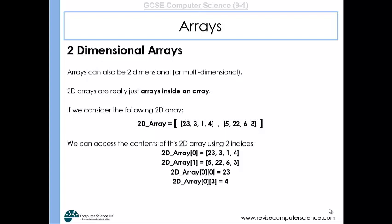2D_array[0][3] would get the number 4. We're looking in that first array, but at the fourth position—the third index where there is the item number 4. 2D_array[1][1] would be 22, and 2D_array[1][2], for example, would be the integer 6.